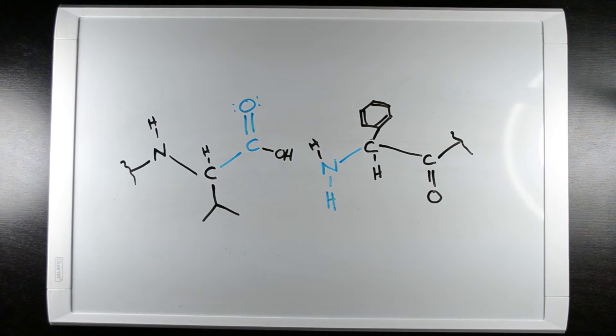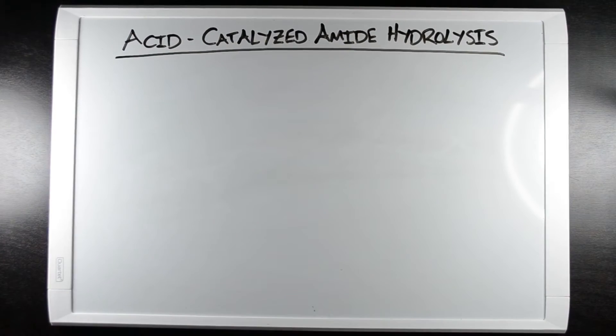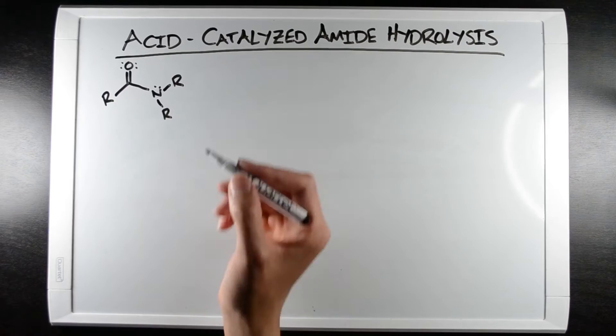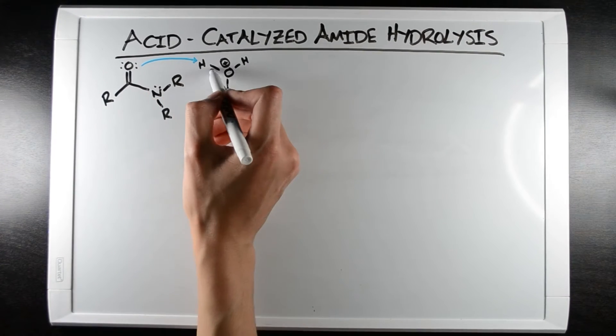Both acid and base catalysts can hydrolyze amides, and both mechanisms will be discussed in this video. Let's start with the acid-catalyzed reaction. Here we have our amide. First, a lone pair of the carbonyl oxygen takes a proton from our acid catalyst.